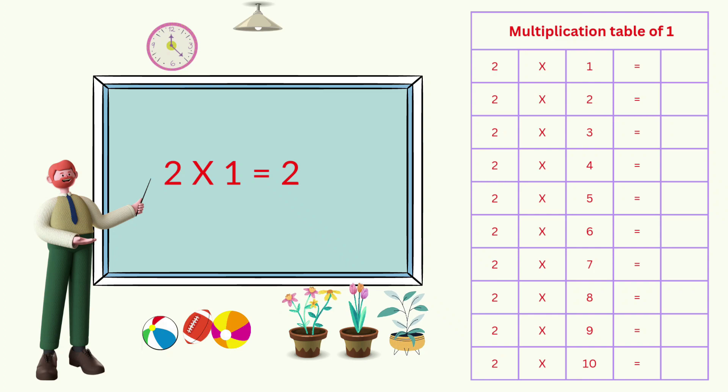2 times 1 equals 2. 2 times 2 equals 4. 2 times 3 equals 6. 2 times 4 equals 8. 2 times 5 equals 10.